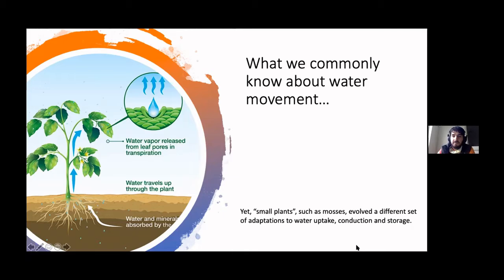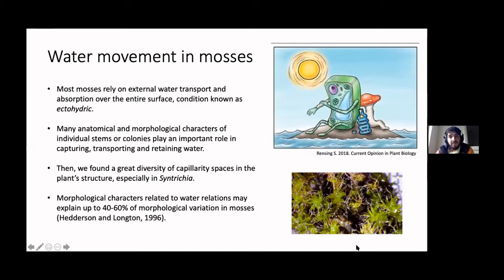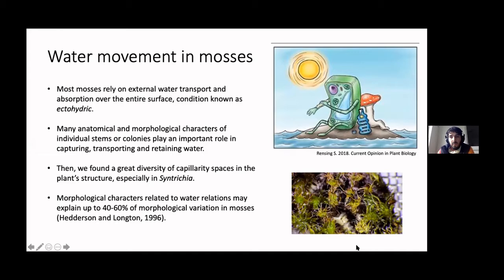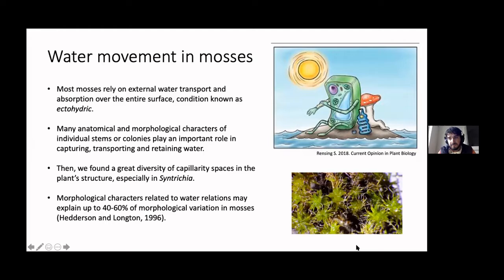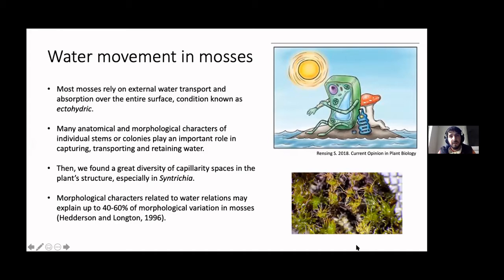So what we can say about water movement in mosses is that most of these guys rely on external water transport and absorption of the entire surface. And this condition is known as ectohydric, which means that in contact with water, the water is absorbed and moves very rapidly along the leaf surface. That's why mosses can react and respond to fog or dew or small water droplets.